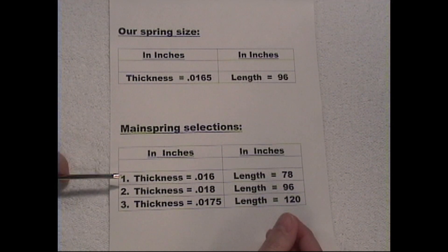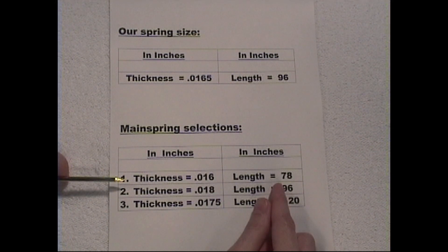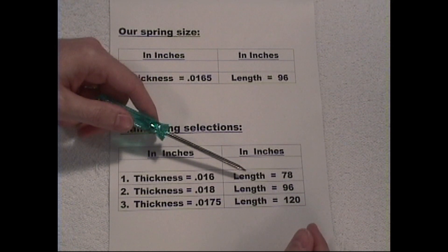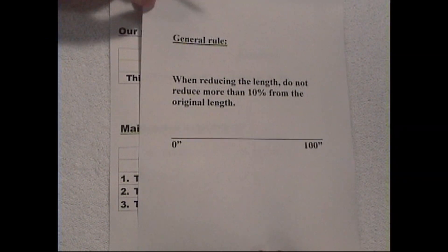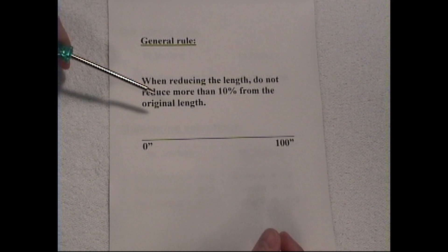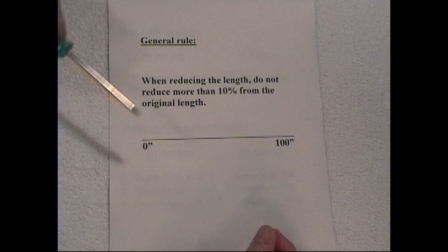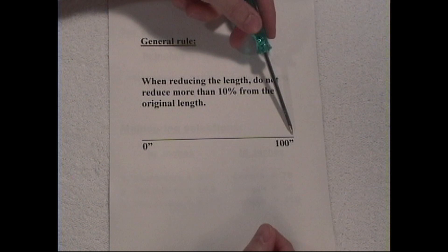I found one here that is a thickness of sixteen thousandths and is seventy-eight inches long. Well, sixteen thousandths sounds like it's pretty close, but the length of seventy-eight inches is a bit too short. Because as a general rule, this is the general rule that you should follow: when reducing the length, do not reduce more than ten percent from the original length. So if you have a hundred inch mainspring, the most that you should reduce that would be ten inches.